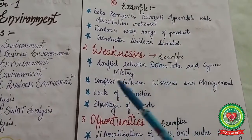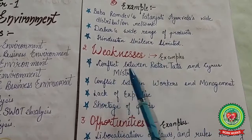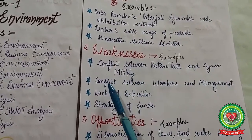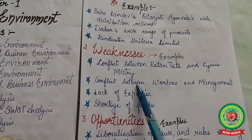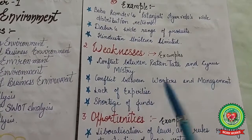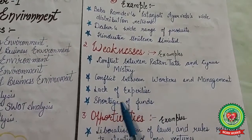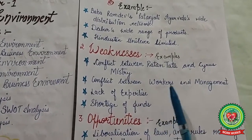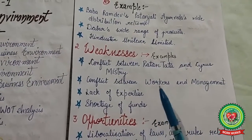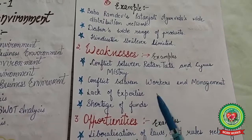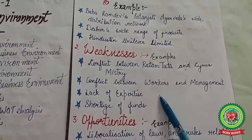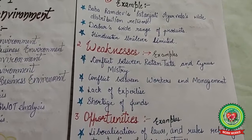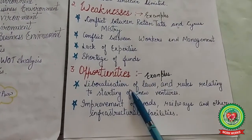The next key term is weakness. For example, the conflict between Ratan Tata and Cyrus Mistry, conflict between workers and management, lack of expertise, and shortage of funds — these are limitations that create hurdles for a company in achieving its goals. These are known as weaknesses.